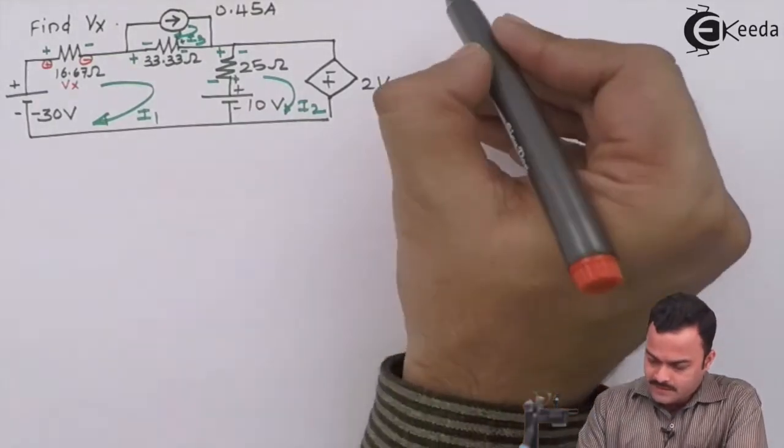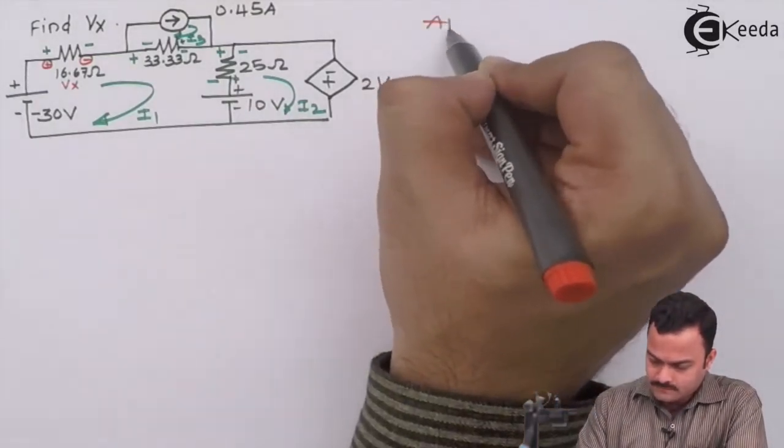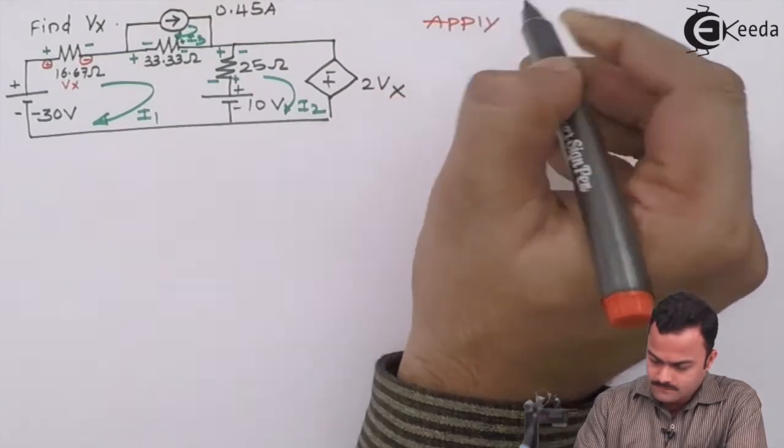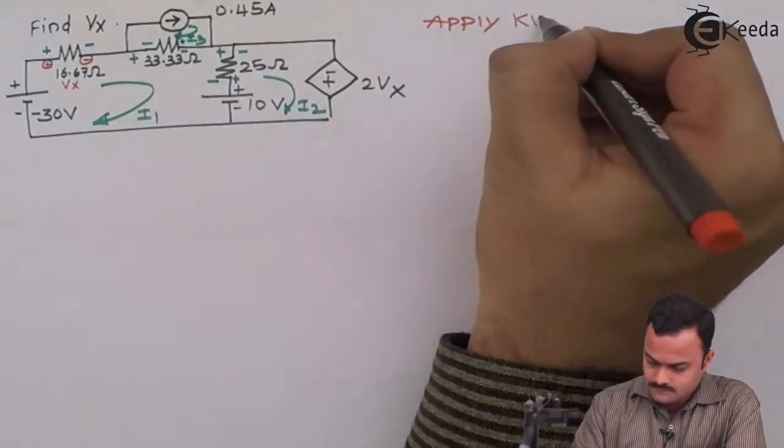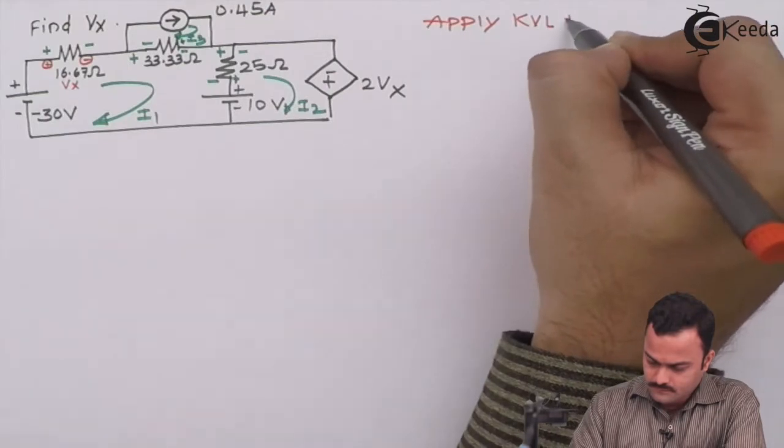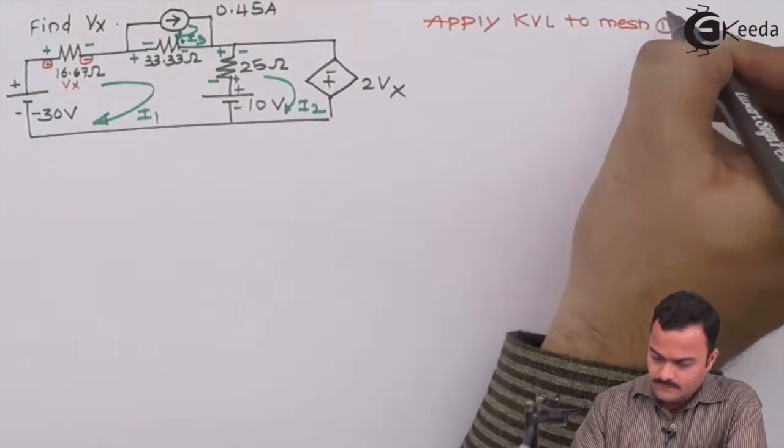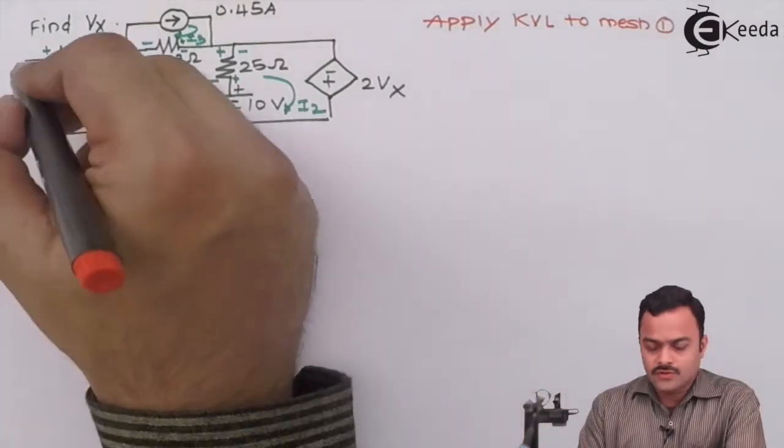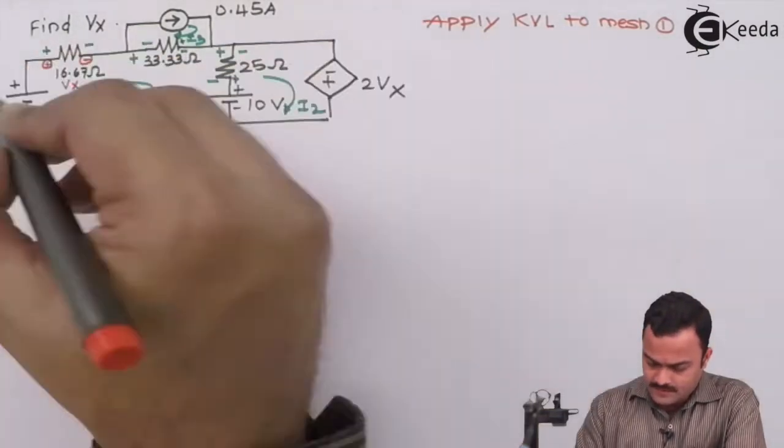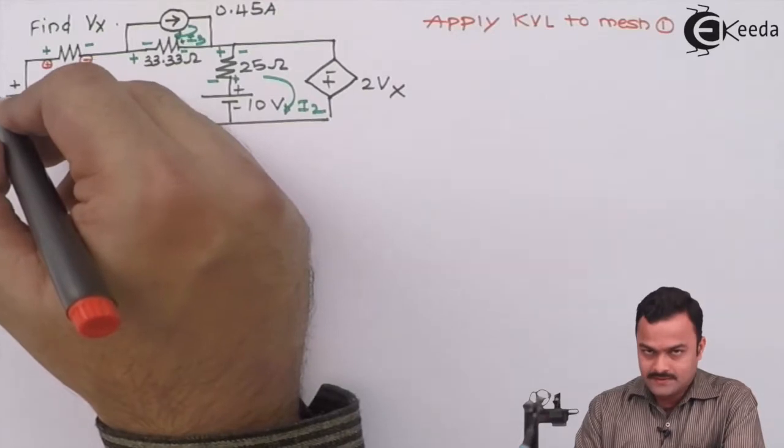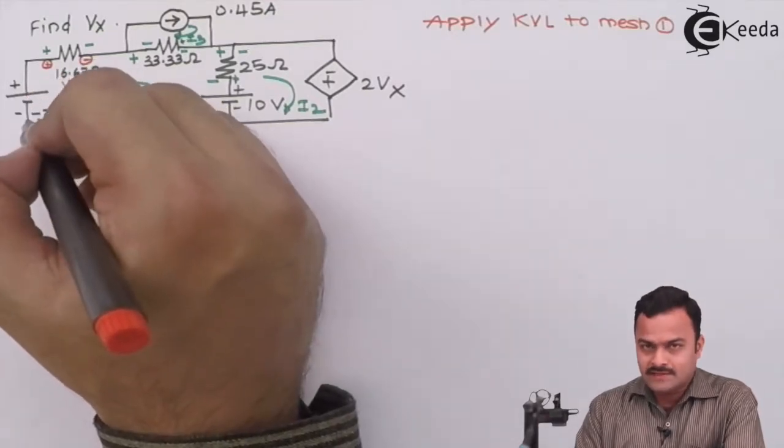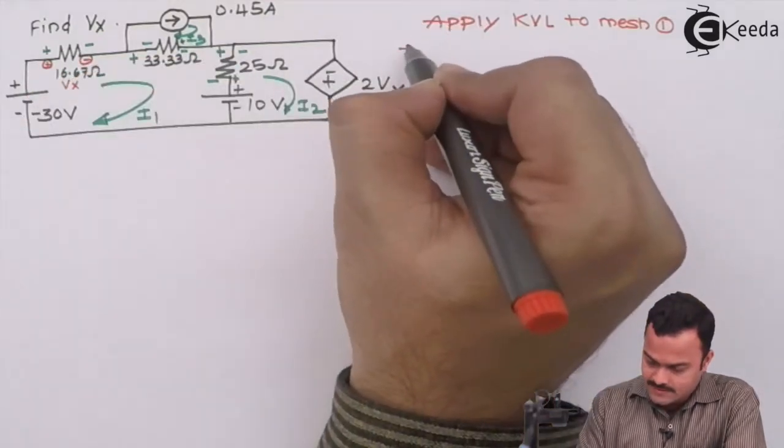Let's apply KVL to mesh 1. Let's start with the voltage source. So minus plus is plus, but the value given is minus 30, hence it is minus 30.